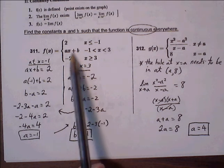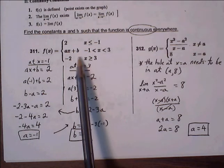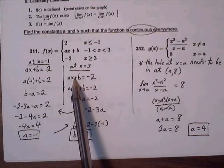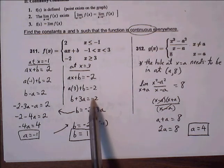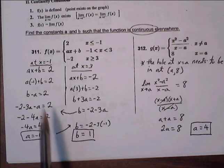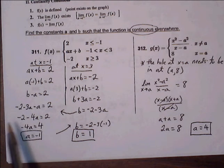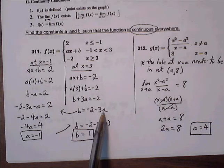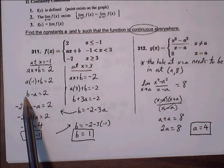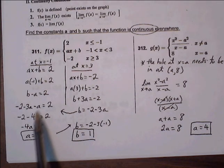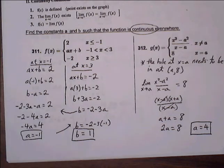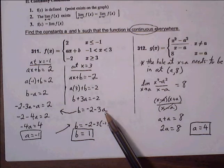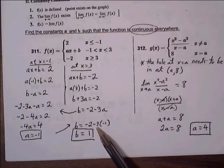We then set the second and third equations equal to each other: ax plus b equals negative 2, plugging in x equals 3 gives 3a plus b equals negative 2. Now we have two equations. Solving for b in the second equation: b equals negative 2 minus 3a. Substituting into the first equation: negative 2 minus 3a minus a equals 2, so negative 2 minus 4a equals 2, giving negative 4a equals 4, so a equals negative 1. Plugging a equals negative 1 back in: b equals negative 2 plus 3 equals positive 1.